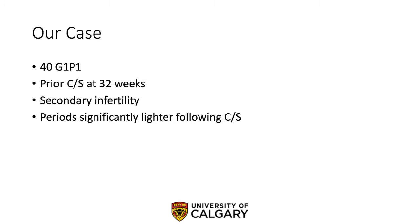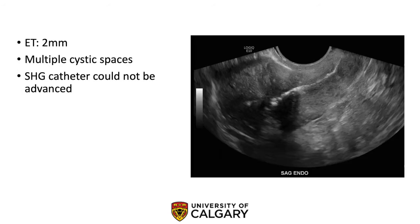Our case involves a 40-year-old gravida one para one with no prior history of infertility. She had a caesarean section at 32 weeks and presented with secondary infertility. Her periods had significantly changed following her caesarean delivery. Ultrasound demonstrated thin endometrium with multiple cystic spaces. Sonohistogram was attempted, but the catheter could not be advanced through the cervical os. Asherman syndrome was suspected and hysteroscopic adhesiolysis was planned. Other modalities for diagnosis include hysterosalpingogram and 3D ultrasound.